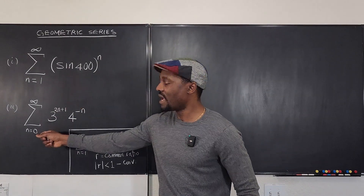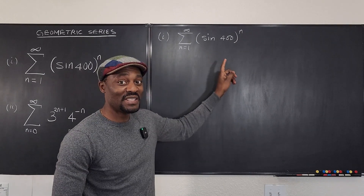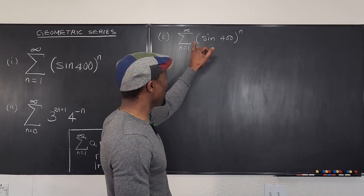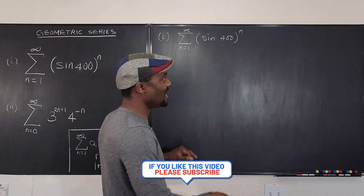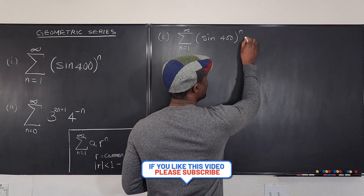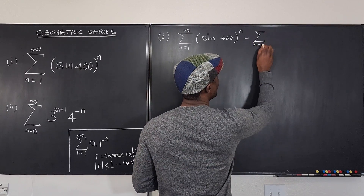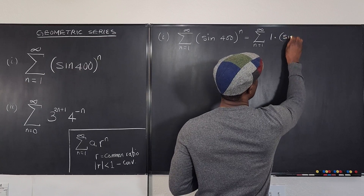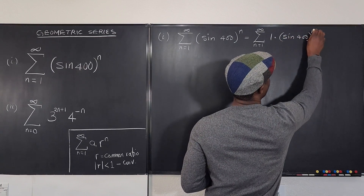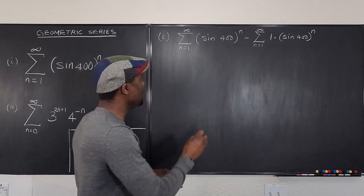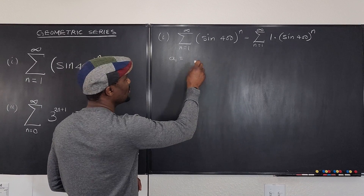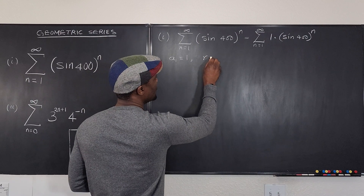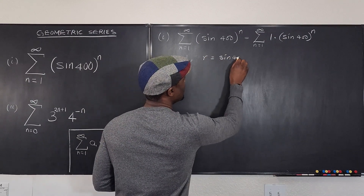For the first problem, this is already written in the form a·r^n because I have something raised to power n. Although there's no coefficient multiplying it, which means there's a one sitting here. So this is the same as the sum to infinity from n equals one of one times sine 400 raised to power n. This is a geometric series. The first term a sub one is equal to one, and the common ratio is equal to sine 400.